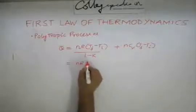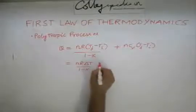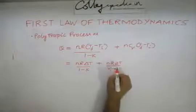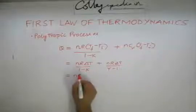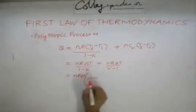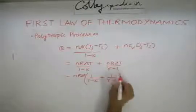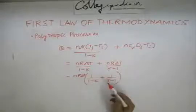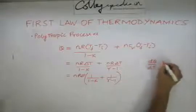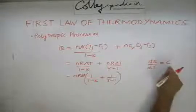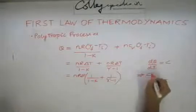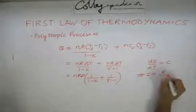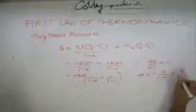So we are left with nR delta T over 1 minus k plus nR over gamma minus 1 times delta T. This equals nR delta T times the quantity 1 over 1 minus k plus 1 over gamma minus 1. For one mole, q equals R delta T times that quantity, and since dq over dT for one mole is the molar heat capacity, the molar heat capacity is R over 1 minus k plus R over gamma minus 1.